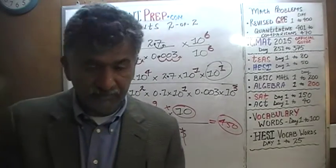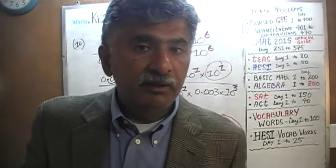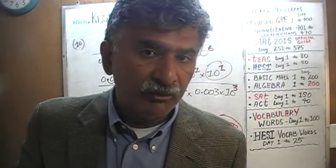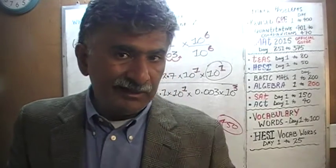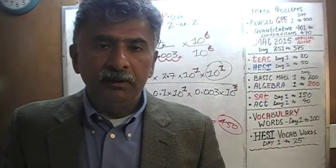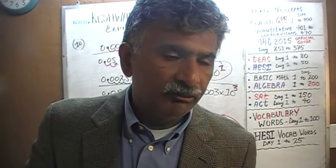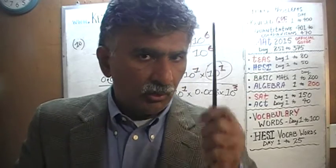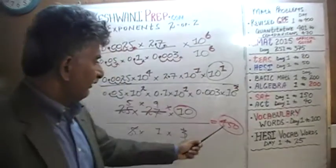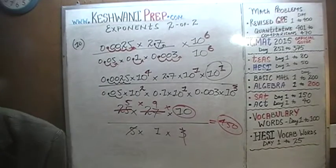The answer choices were presented in descending order, starting from 450. So the answer is A. Had the choices been in ascending order, the answer would have been E — but since they go from 450 down to 0.045, the answer is A. Well, that was problem 10. We are done. Bye!